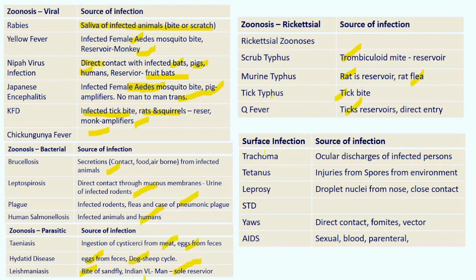Surface infections — source of infection: Trachoma from ocular discharges of infected persons. Tetanus: spores from the environment, as spores are present everywhere on earth — this is the one disease practically not possible to eradicate from the world. Leprosy: droplet nuclei from the nose and close contact — even though transmitted mainly by droplet nuclei from the nose, it is listed under surface infection. STDs are sexually transmitted. Yaws by direct contact. AIDS by sexual, blood, and parenteral routes.